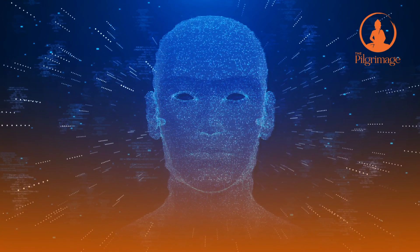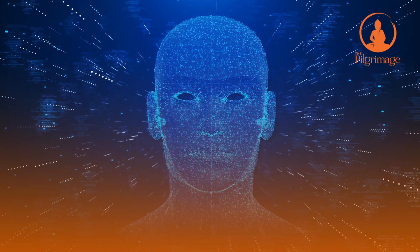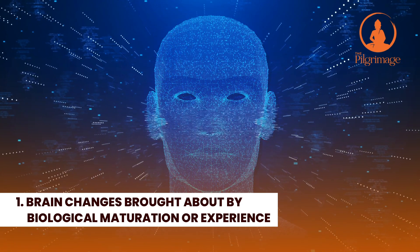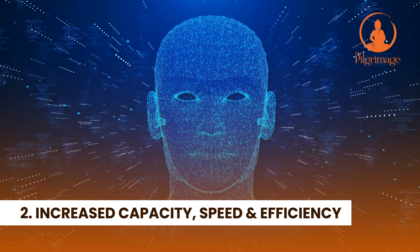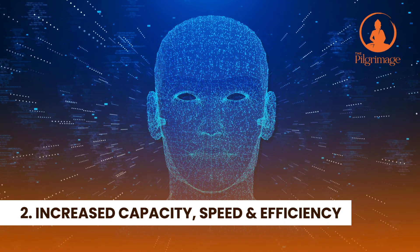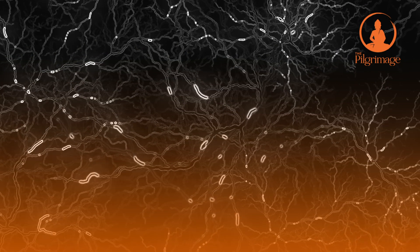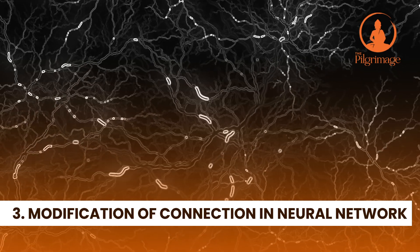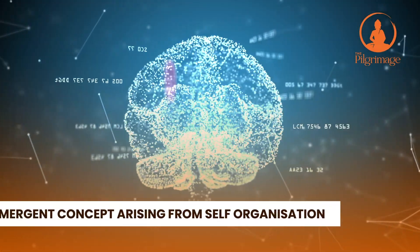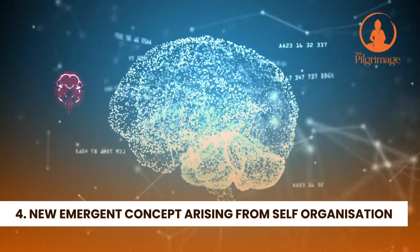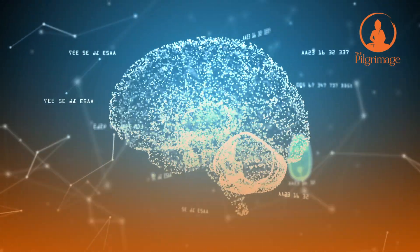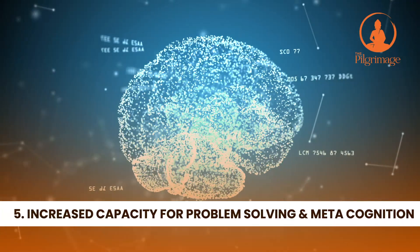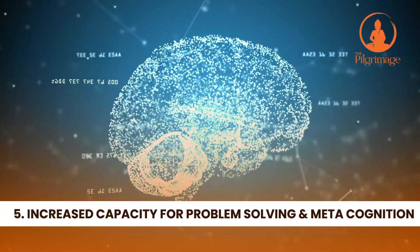From an information processing perspective, some of the most important developmental aspects are: 1) Brain changes brought about by biological maturation or experience. 2) Increased processing capacity, speed, and efficiency as a result of both maturation and knowledge development. 3) Modifications of connections in a neural network. 4) New emergent concepts arising from repeated self-organization as a result of adapting to the demands of a changing environment. 5) Increased capacity for problem solving and metacognition.